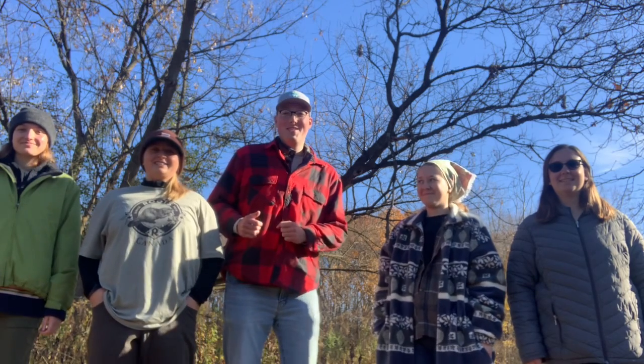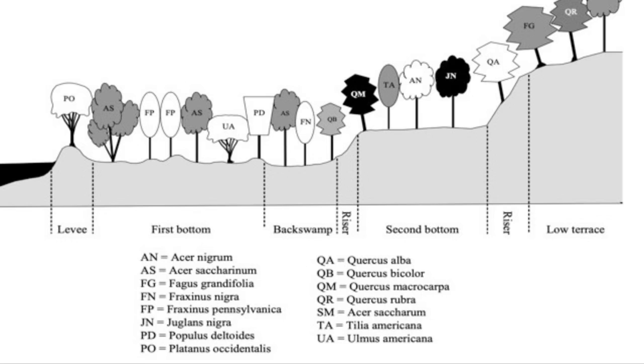Welcome to Flushing Township Nature Park in Flushing, Michigan. We have adopted this floodplain forest for our forest ecology class to fully assess its complete ecosystem. Floodplain forests are interesting due to the number of different landscapes that can be found within one area. We have assessed the levee, first bottom, back swamp, second bottom, and low terrace. We are so excited to share our results.